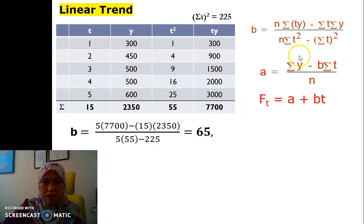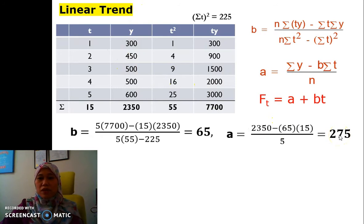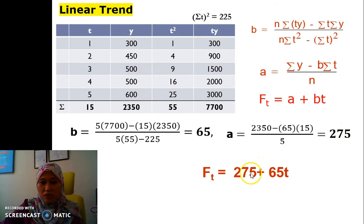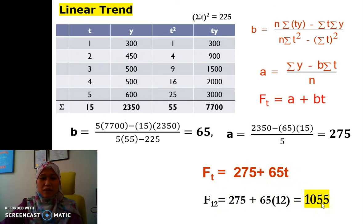So when we have all the information here, we start with b. We put in all the information here and we get 65. And then for a, we put in all the information here, we got 275. And then we need to come up with the equation. For the equation, we have a is 275 plus b is 65t. So since the question wants us to answer for December, F12, we apply 12 here, so we get 1055.